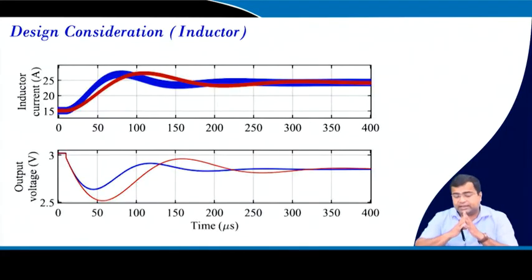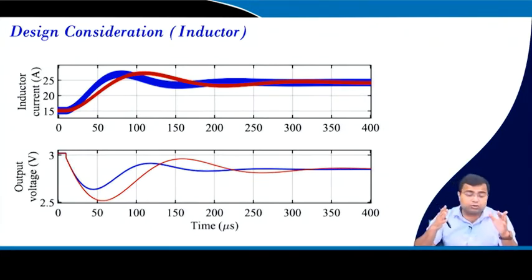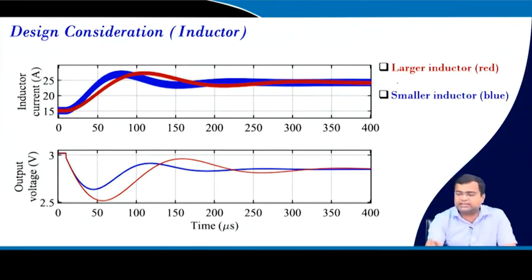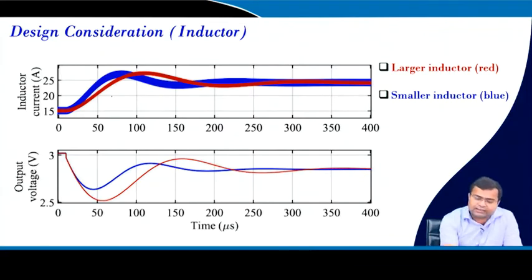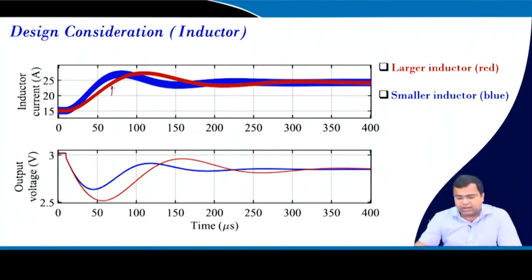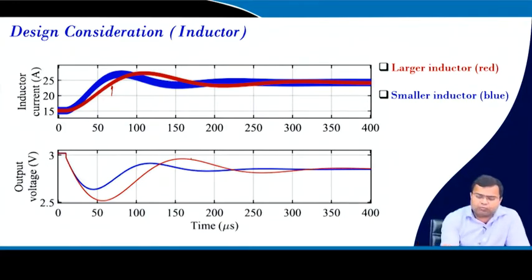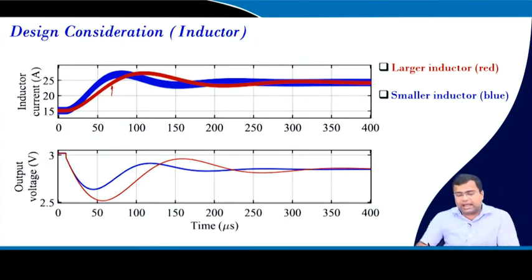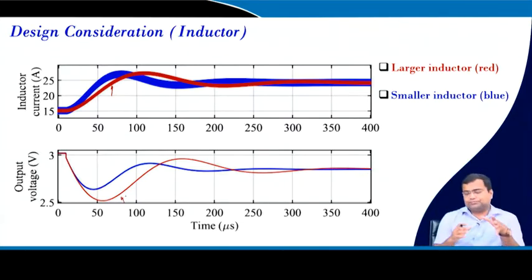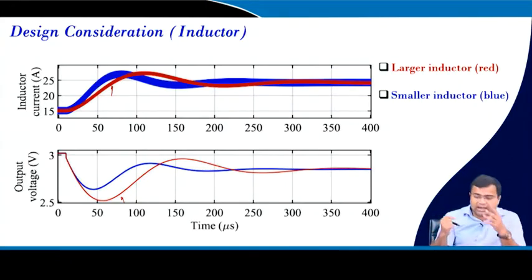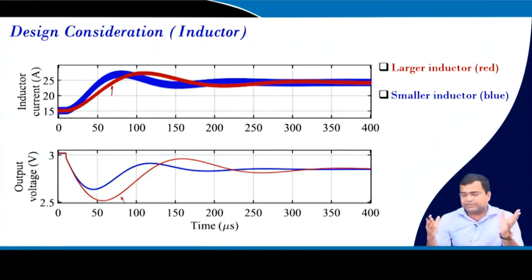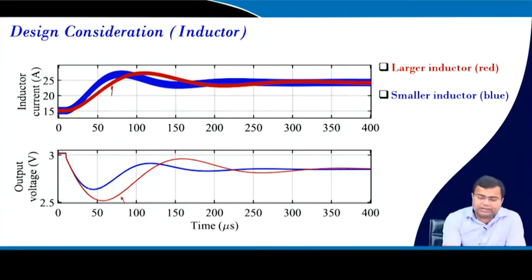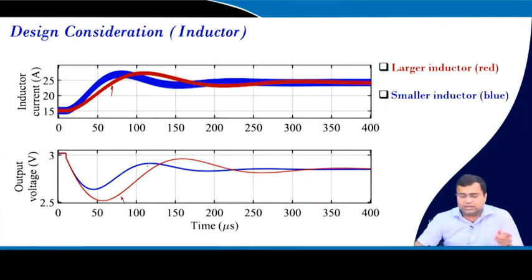In design consideration, if we take a large inductor versus a small inductor under open-loop load transient for a practical buck converter, it can be shown that a large inductor offers smaller current ripple, which may reduce conduction loss and output ripple. However, it penalizes in terms of output voltage undershoot because the slew rate of the inductor current is small due to the higher inductance. A smaller inductor gives larger current ripple but drastically reduces undershoot due to its higher slew rate.